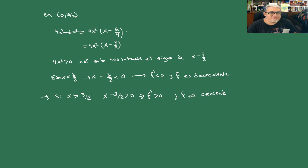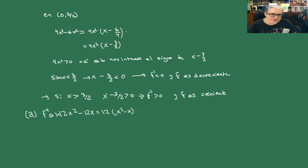Ya encontramos los máximos y mínimos y ya vimos dónde es creciente y dónde es decreciente. Paso tres: vamos a volver a derivar. f''(x) = 12x² - 12x, que es lo mismo que 12x(x - 1).